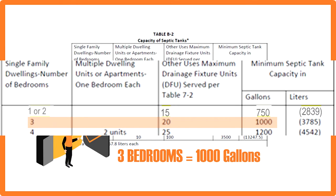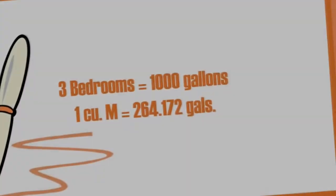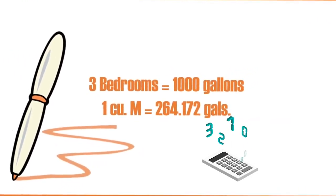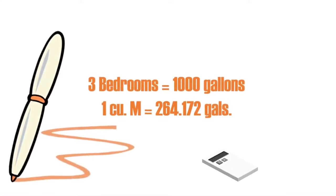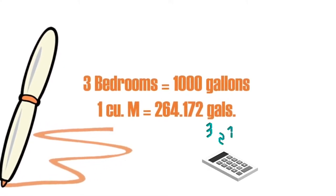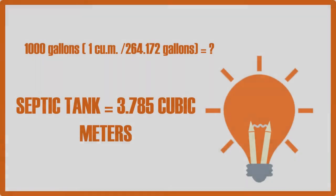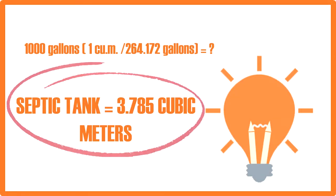Again, three bedrooms is equivalent to 1,000 gallons. To get the volume of the septic tank, we must first convert the values to the needed units so that we can apply them to our formula. After that, we can get the volume by dividing 1 cubic meter by 264.172 gallons and then multiplying the answer by 1,000 gallons.